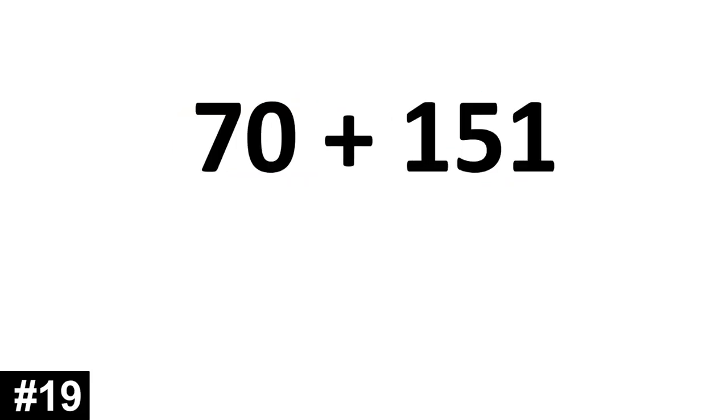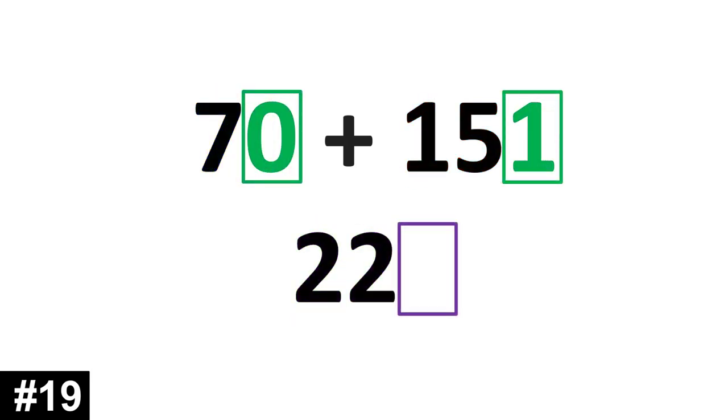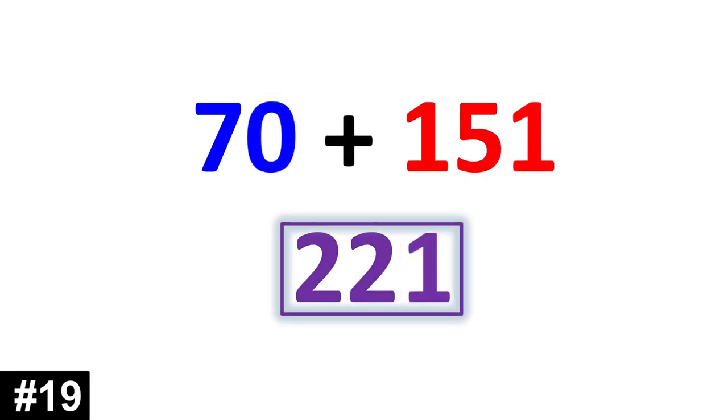70 plus 151. We have 7 tens plus 15 tens. 7 plus 15 is 22. We add the ones. 0 and 1 gives us 1. 221.